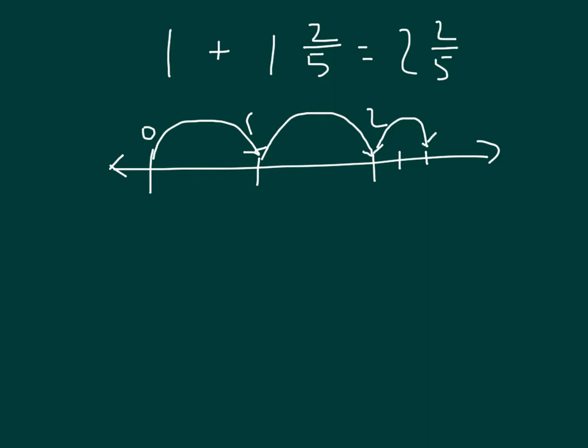If we looked at the rest of that number line, where we have 3 there, we would have something along the lines like that there, where we have fifths. So we have 1 plus 1 plus 2 fifths equals 2 and 2 fifths.